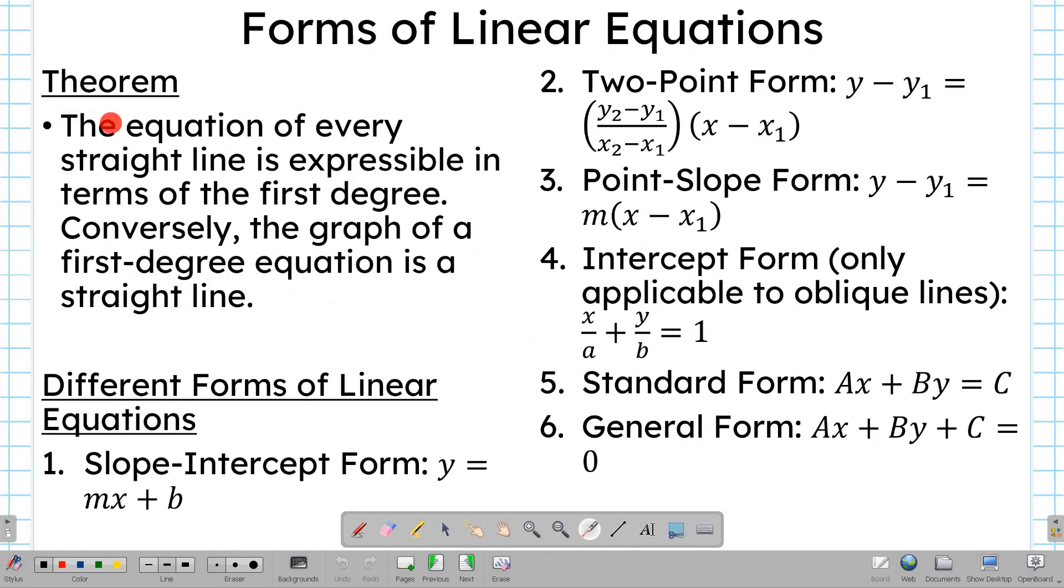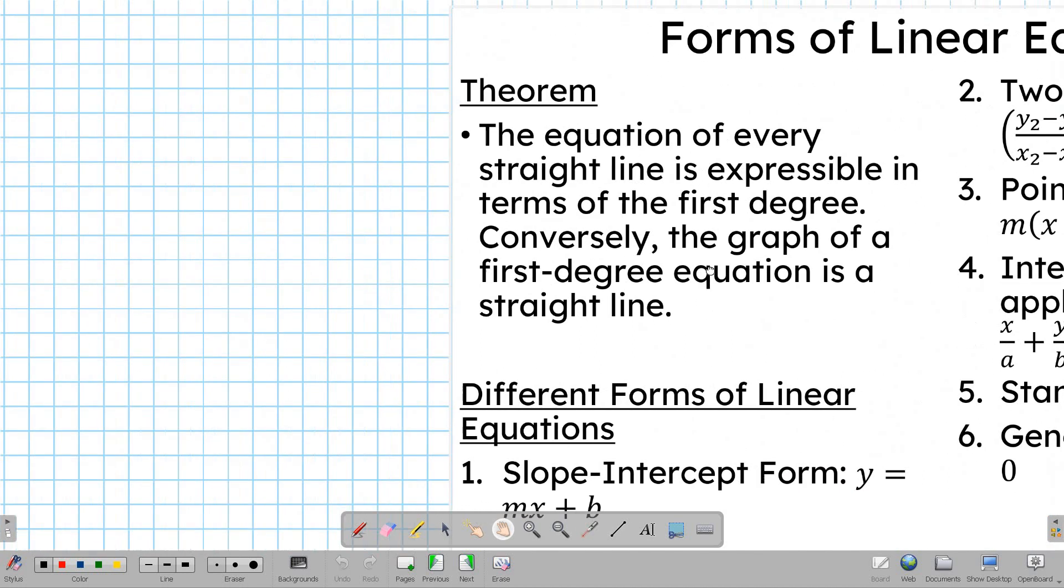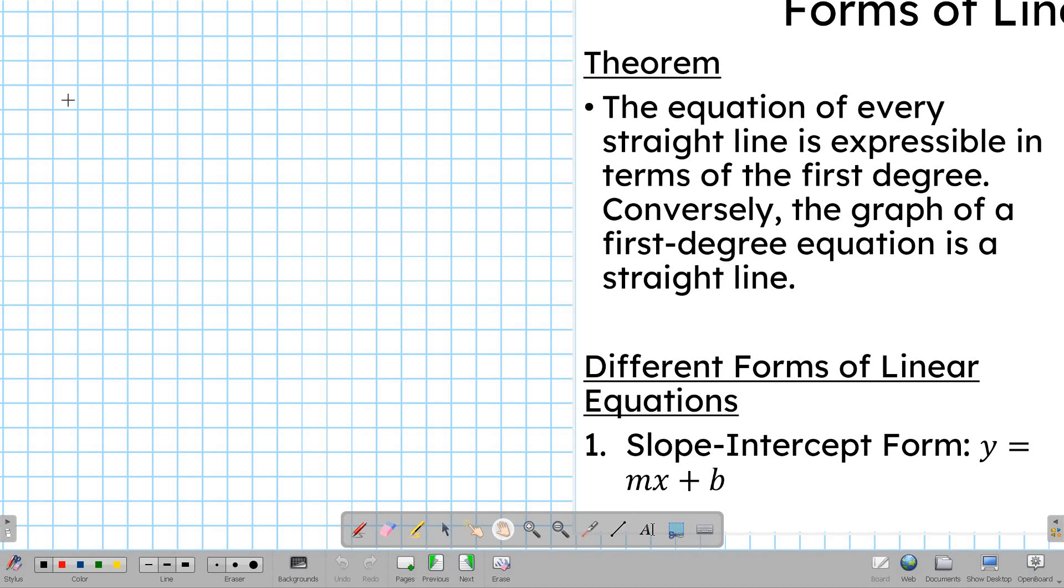First, the equation of every straight line is expressible in terms of the first degree, which means no x squared, no y cubed, all first degree only, exponent of 1. Conversely, the graph of a first-degree equation is a straight line. Since we've been working in a Cartesian plane, let's construct a Cartesian plane here.